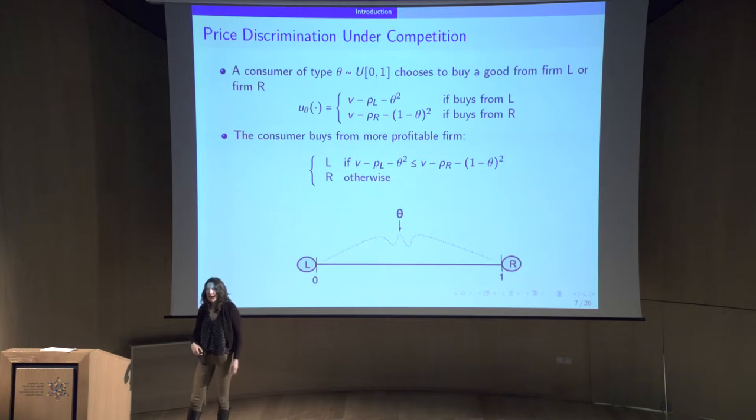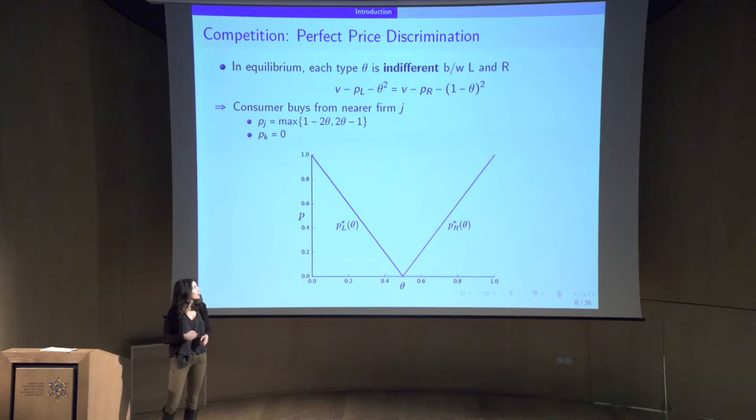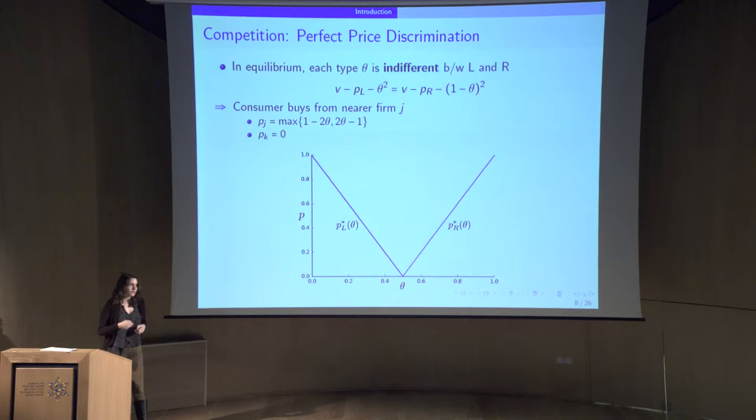A consumer theta's utility is going to be V minus the price he pays if he buys from the left guy minus the squared distance to the left guy if he buys here and the analog on the right. One minus theta squared is just the distance to the right. In general, we're going to say that the consumer will buy from whichever firm gives him more utility. Now suppose you have perfect price discrimination. That is to say that firm L and firm R can price specifically to every type theta. They know exactly what theta is and they can set up a specific price.